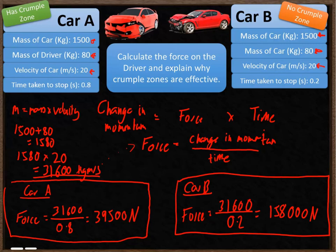Bigger force will do more damage. We can actually work out how many times bigger the force is for people in car B by taking the larger force, 158,000, divide it by 39,500 newtons. And the answer to that is 4.